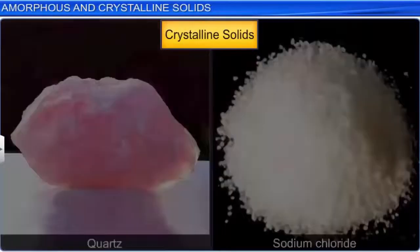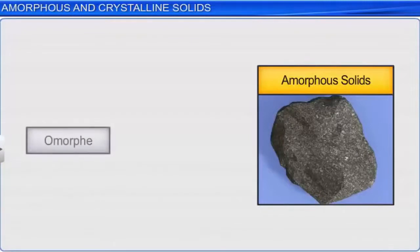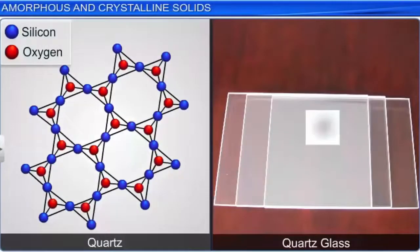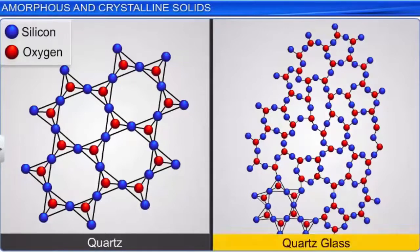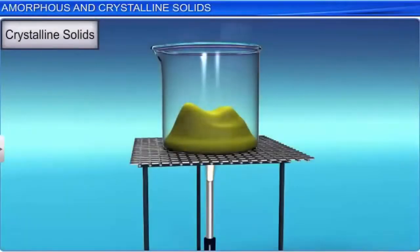Now, let's discuss amorphous solids. The term amorphous has been derived from a Greek word, 'amorph', which means shapeless. An amorphous solid consists of a number of constituent particles arranged in a random manner. Thus, amorphous solids do not have any definite geometry. There is short range order, which means that there is an irregular arrangement of particles that repeats itself to a certain extent only.